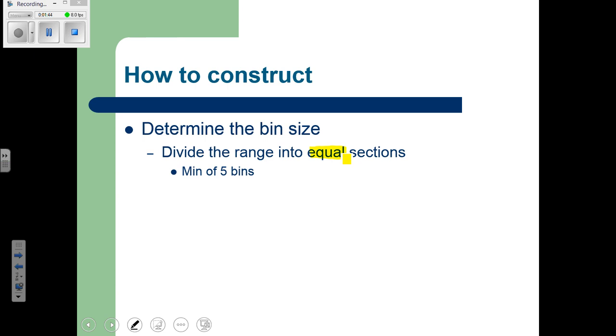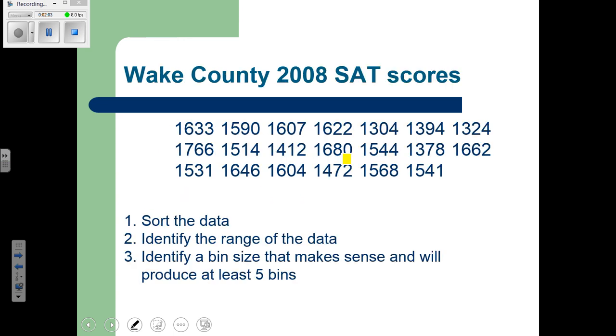But one of the best ways to do that, so we get a really good look at what the shape is, is we want to make sure that we have equal size bins. From there, a frequency table can just help us organize the data in terms of how many pieces of data fall into each bin, and then we'll draw a graph. So let's say that we took this 2008 SAT scores from Wake County.